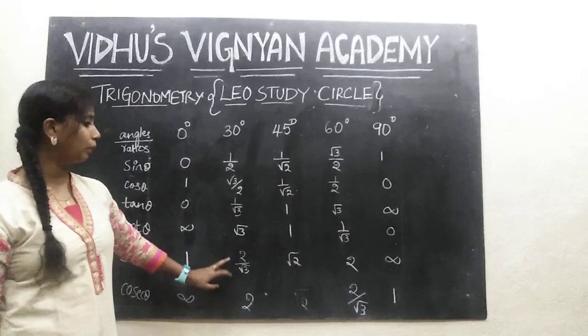Next, secant theta. What is the relationship for secant? Secant theta is 1 by cos theta. The same thing applies here. Cos 0° is 1, so secant 0° is 1. What I mean by 1 by something is reciprocal. Cos 30° is root 3 by 2, so secant 30° is 2 by root 3. Cos 45° is 1 by root 2, so secant 45° is root 2. Secant 60° will be 2.